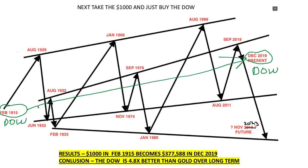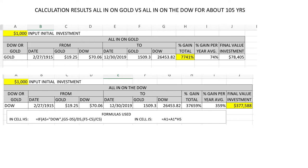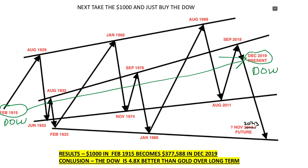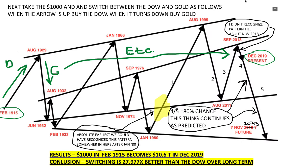The absolute earliest we could have known this pattern existed would be after 1980, when it turned up, and really more clearly after it had hit that point perfectly. I didn't recognize this pattern myself until recently, and I haven't seen any videos on it — hence why I'm making this series. If I had to calculate the odds this pattern continues, at minimum it's done it 4 out of 5 times — that's an 80% chance minimum.